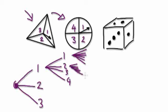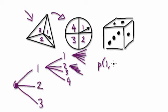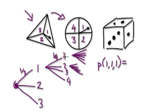Each branch of the die has outcomes 1 through 6. Once you've drawn a rough map of what's going on in your mind, you can work with it properly. So here you'd need the probability of 1, 1, 1. The probability of getting 1 on the spinner is 1/3, then 1/4 for the four-section spinner, and 1/6 for the die.